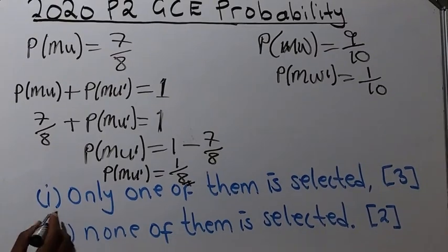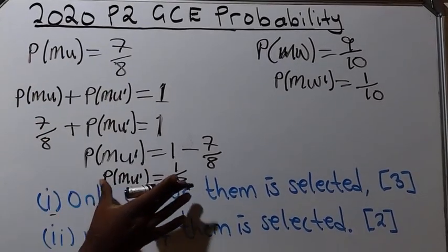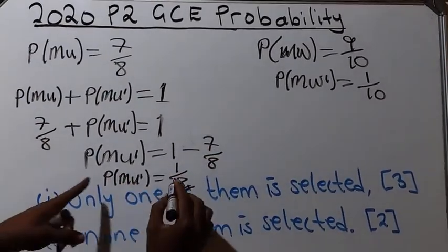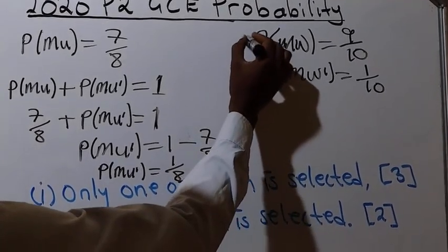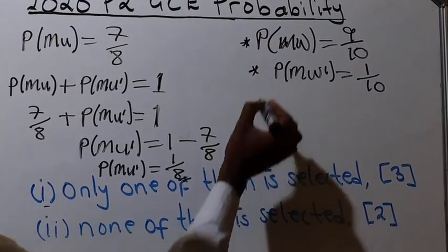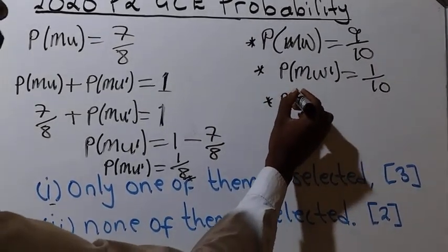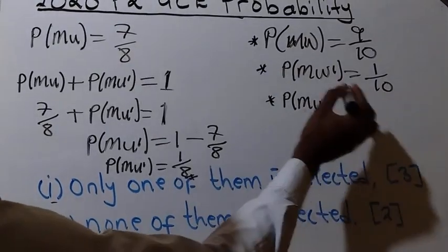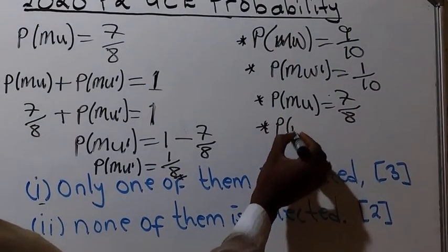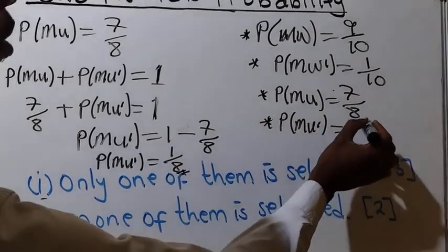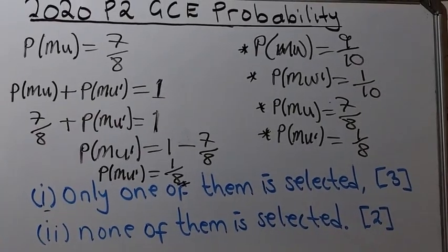So to summarize the information we are going to use: probability of choosing Muthola is 7 over 8, probability of not choosing Muthola is 1 over 8, probability of choosing Mwambi is 9 over 10, and probability of not choosing Mwambi is 1 over 10.